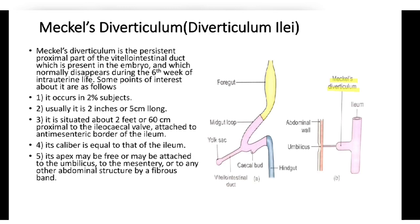Meckel's diverticulum is the persistent proximal part of the vitellointestinal duct, which is present in the embryo and normally disappears during the 6th week of intrauterine life. It occurs in 2% of subjects, is usually 2 inches (5 cm) long, and is situated about 2 feet (60 cm) proximal to the ileocecal valve, attached to the antimesenteric border of the ileum. Its caliber equals that of the ileum, and its apex may be free or attached to the umbilicus, mesentery, or other abdominal structures by a fibrous band.